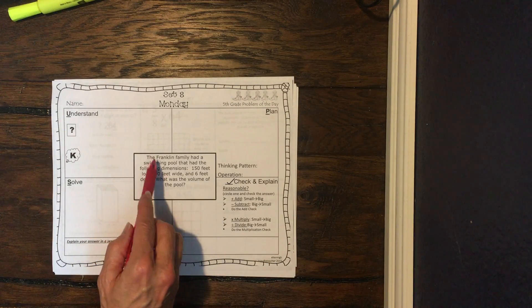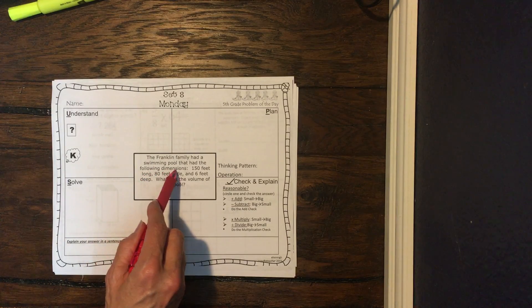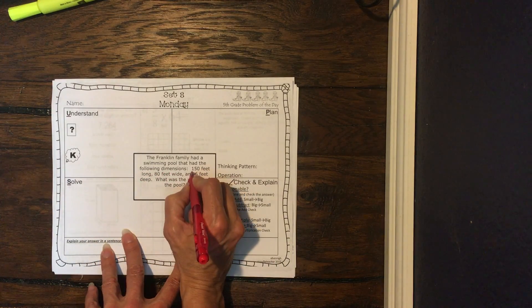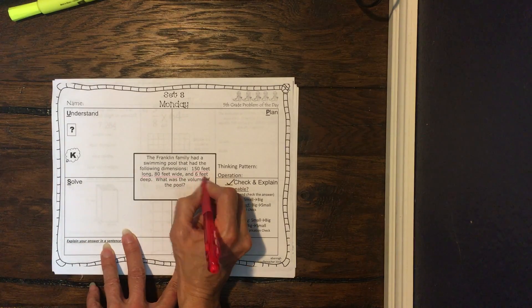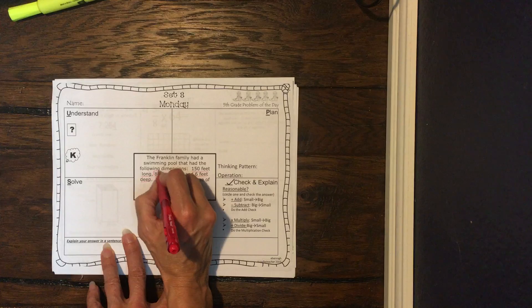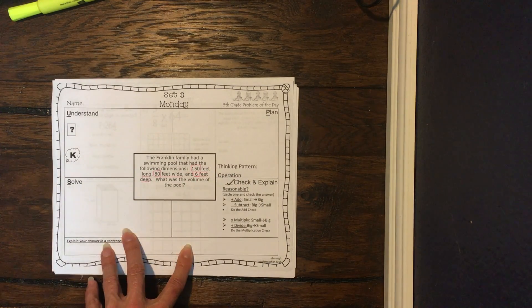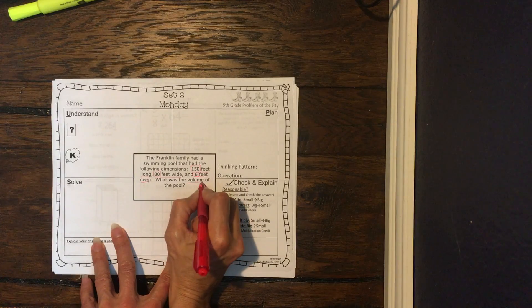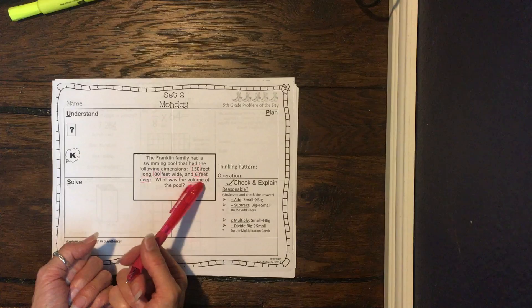So, the problem today says the Franklin family had a swimming pool that had the following dimensions: 150 feet long, 80 feet wide, and 6 feet deep. So we have 80 feet, 150 feet, and 6 feet. It says, what is the volume? Obviously, we've been given those three numbers to find the volume.